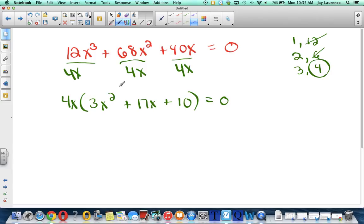Now I'm going to factor inside here. I'm going to ignore this 4x. I'm not throwing it away. I'm just going to ignore it. Off to the side. Maybe I'll write 3x squared plus 17x plus 10. And I'm going to multiply a times c and get 30.